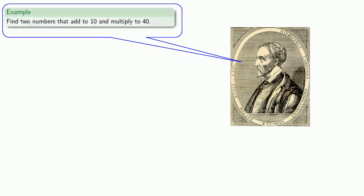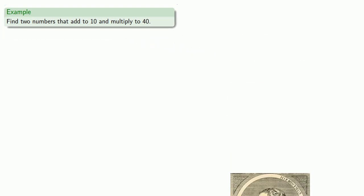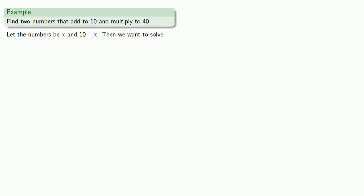Find two numbers that add to 10 and multiply to 40. Now if we try to solve this problem, we'll let our numbers be x, and since they have to add to 10, the other one will be 10 minus x. Since we want them to multiply to 40, we want to make sure that x times 10 minus x equals 40. So now let's try and solve this equation.